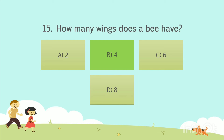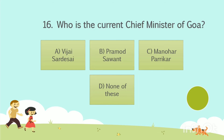Shall we go to the next question? Question No. 16. Who is the current Chief Minister of Goa? Option A: Vijay Sardeshai. Option B: Pramodh Savant. Option C: Manohar Parikar. Option D: None of these. Your time starts now. The answer is Option B: Pramodh Savant.